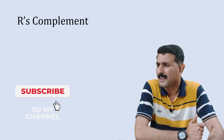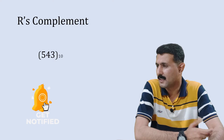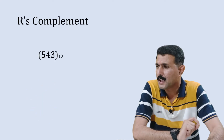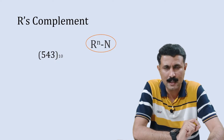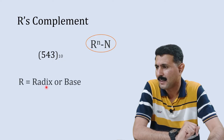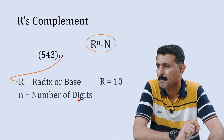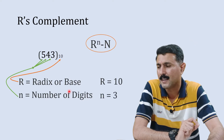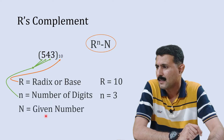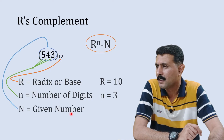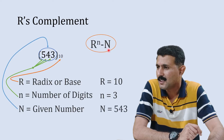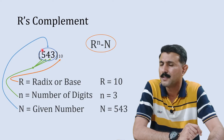Now let's understand how to find r's complement of any number. Take the decimal number 543. The equation to find r's complement is r raised to n minus capital N, where r is the radix or base (here 10), small n is the number of digits (here 3), and capital N is the given number (543).